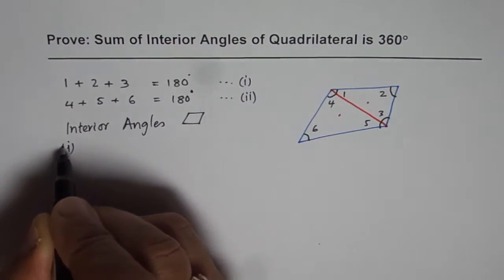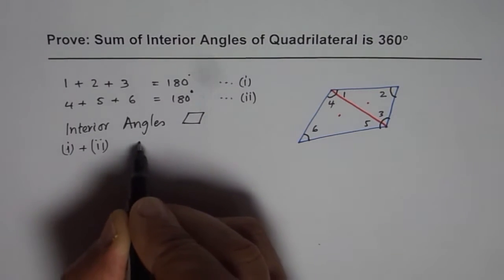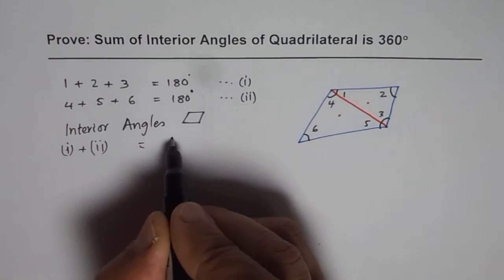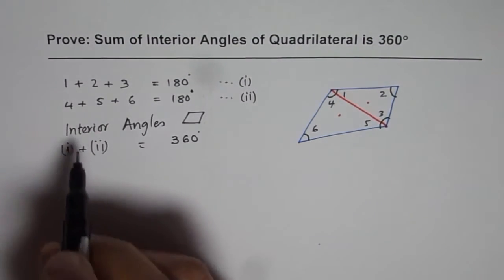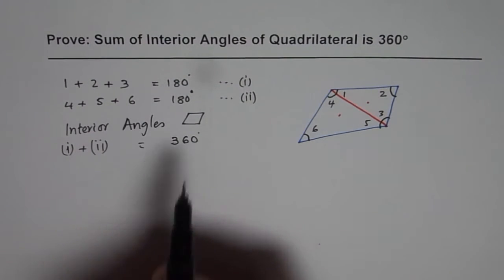So add one plus two will give us how much? 360 degrees. Do you see that? So that is one plus two plus three plus four plus five plus six equals 360.